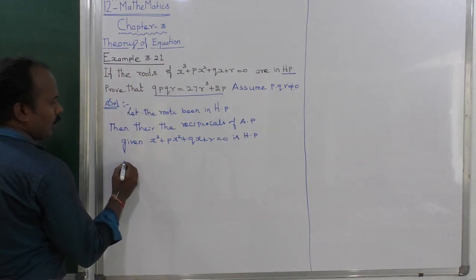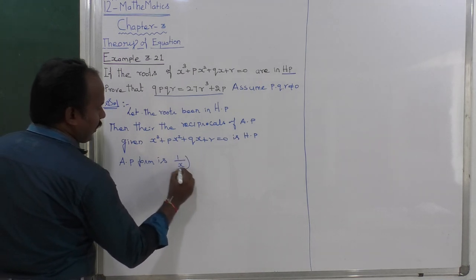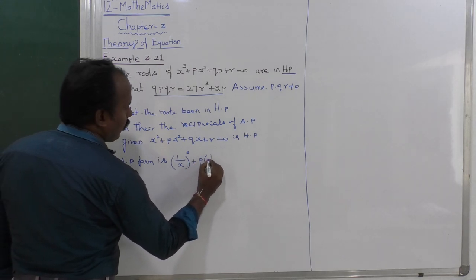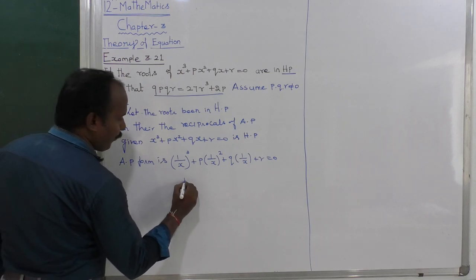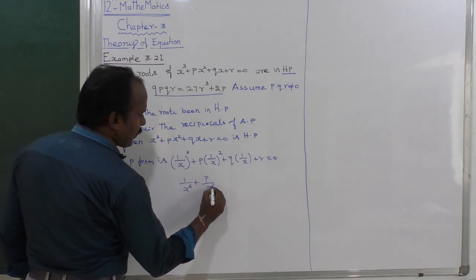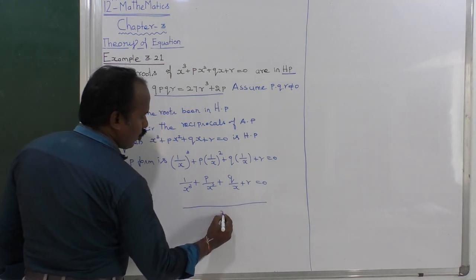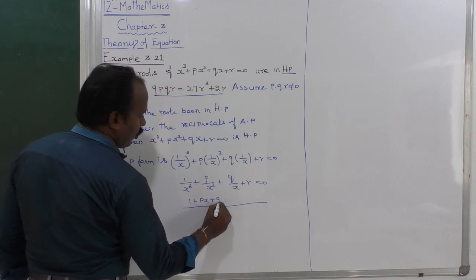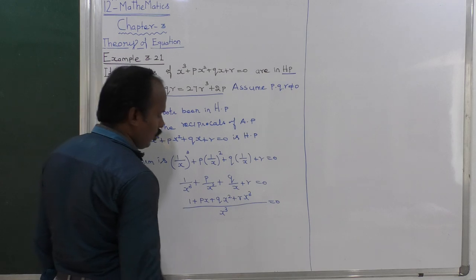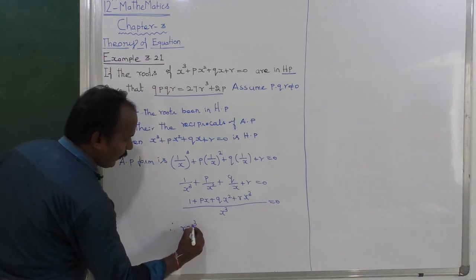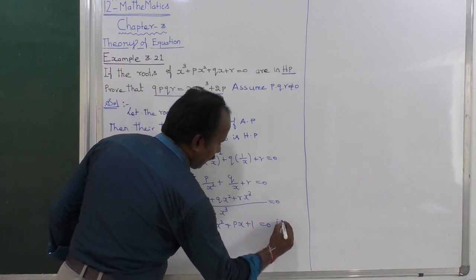To convert to AP form, substitute 1/x in place of x: (1/x)³ + p·(1/x)² + q·(1/x) + r = 0, which gives 1/x³ + p/x² + q/x + r = 0. Multiplying through by x³, we get 1 + px + qx² + rx³ = 0, or rearranged: rx³ + qx² + px + 1 = 0. This is the AP form.